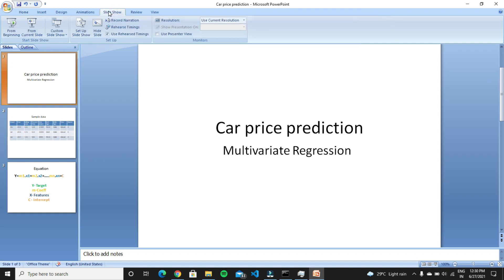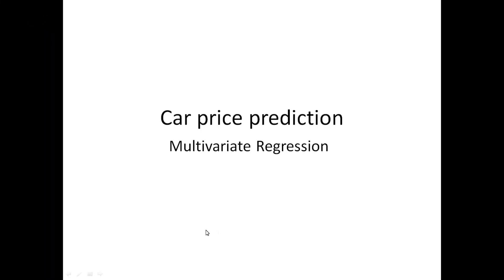Hello Python programmers, this is Arun. In this video we are going to see a Python project based on the multivariate regression algorithm using the sklearn library in Python. We are going to apply the algorithm on a car dataset which contains some features that help define the price of cars. This algorithm uses multiple features or variables to predict the target.